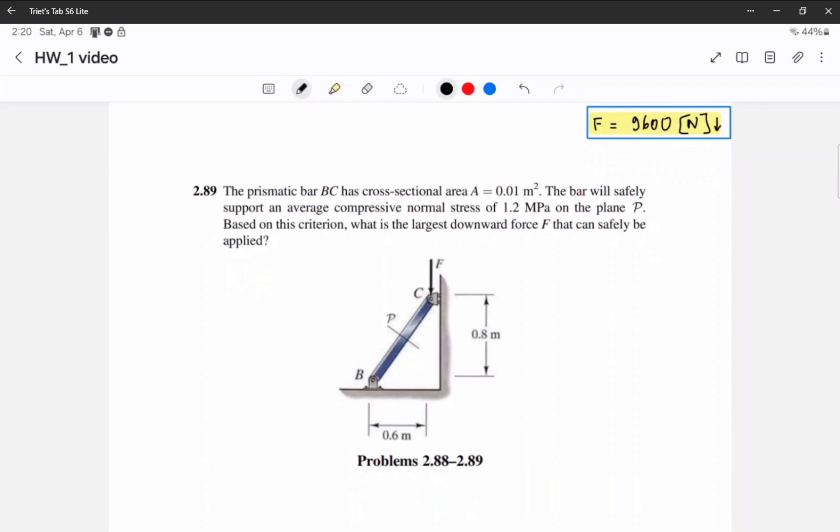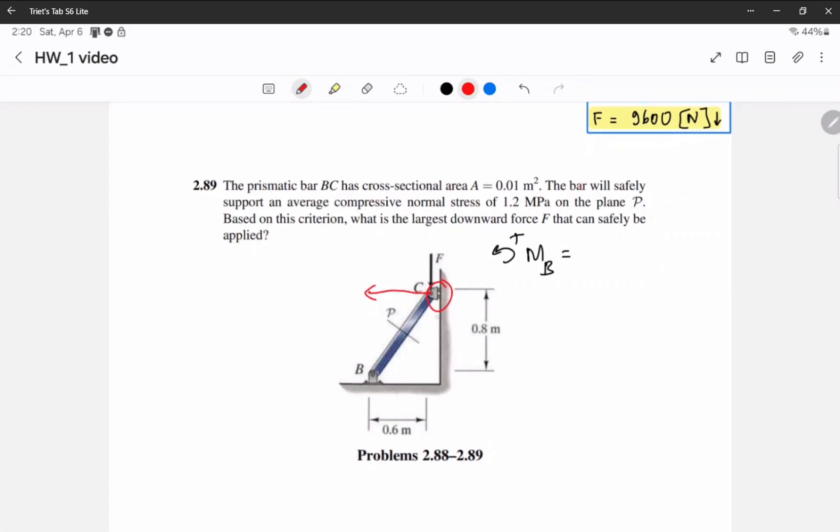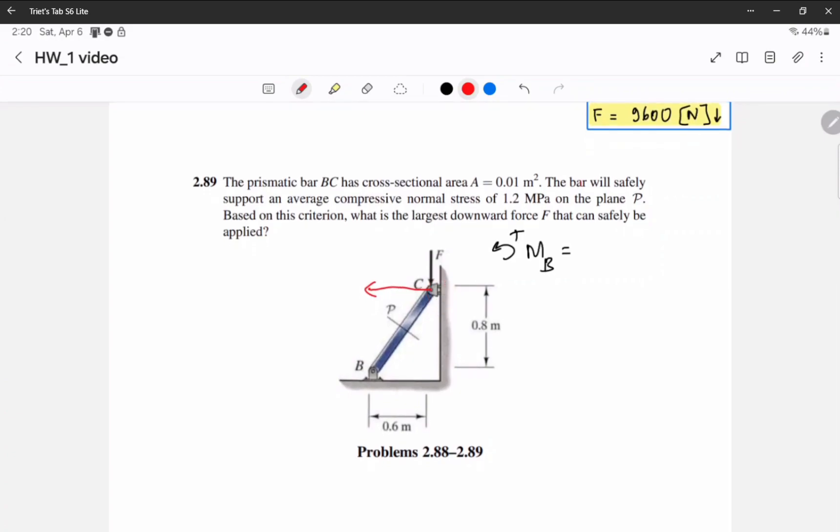This is problem 2.89. So first you're going to do the moment around point B. Here at point C you're going to have a reaction force like this, right? Because of the specific support, the reaction force is only perpendicular to the plane.